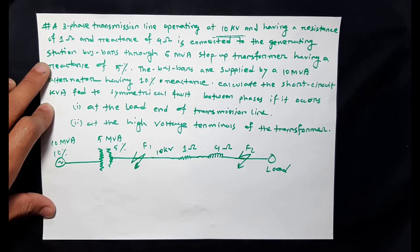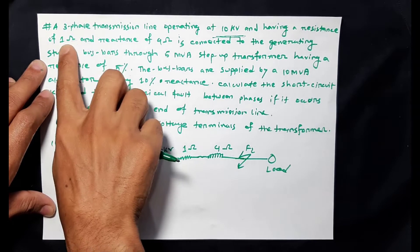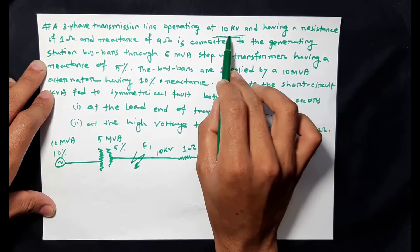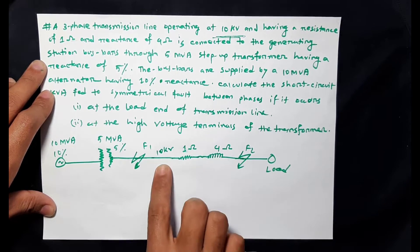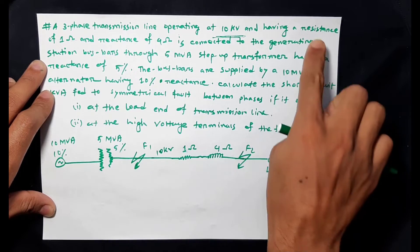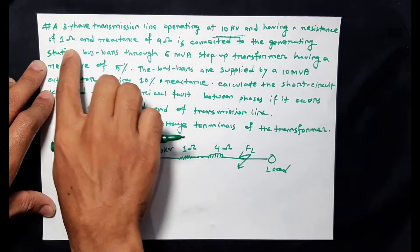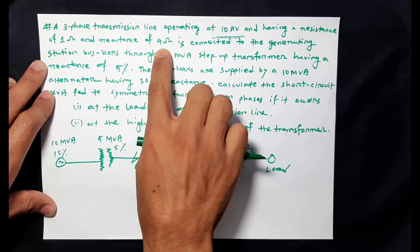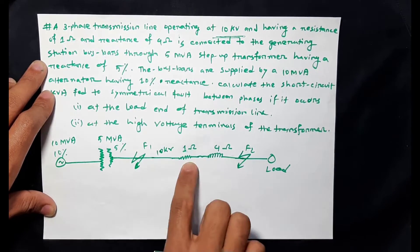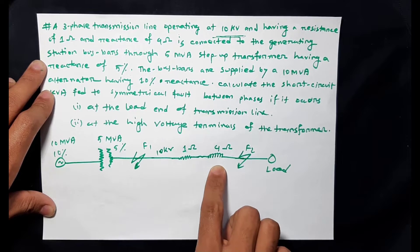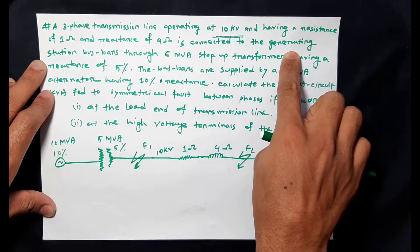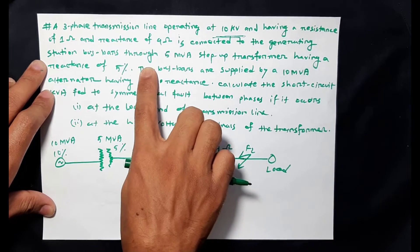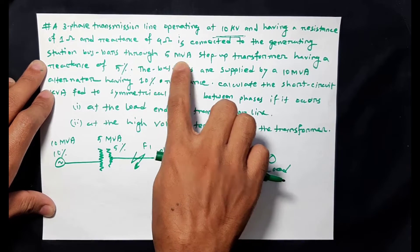Hi, this is my video of symmetrical forwarding — I have to solve problems. A three-phase transmission line operating at 10 kV, having a resistance of 1 ohm and reactance of 4 ohm, is connected to the generating station bus bar through a 5 MVA transformer.